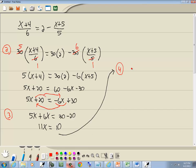Step 4, divide both sides by the number in front of your x. So I'm going to divide both sides by 11, and these 11s cancel here. And we get x is equal to 10 over 11, that's our answer.